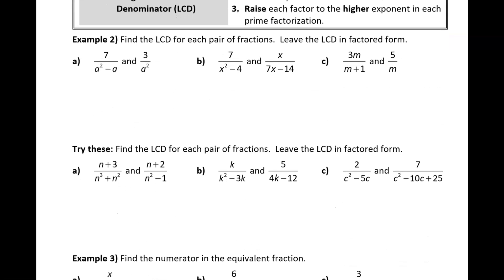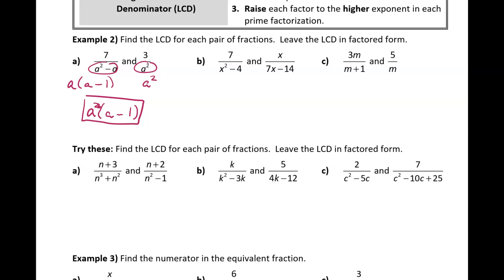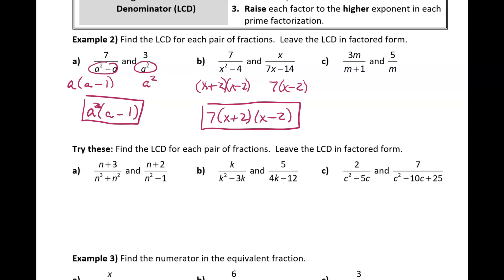For example, with two denominators: a squared minus a, which factors into a times (a minus 1), and a squared, which stays as a squared. The LCD contains factors of a and (a minus 1), with a raised to the second power. For another example, denominators of (x plus 2)(x minus 2) and 7 times (x minus 2) — the LCD contains all those factors, and since none are raised to a power, that's the LCD.